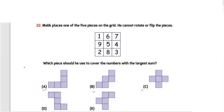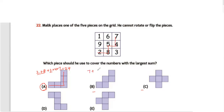For option A, the piece covers numbers 2, 8, 3, 4, 7 — that gives 8 plus 2 is 10, 7 plus 3 is 10, plus 4, totaling 24. For option B, the numbers are 7, 5, 4, 2, 8 — that gives 10 plus 9 plus 7, totaling 26.